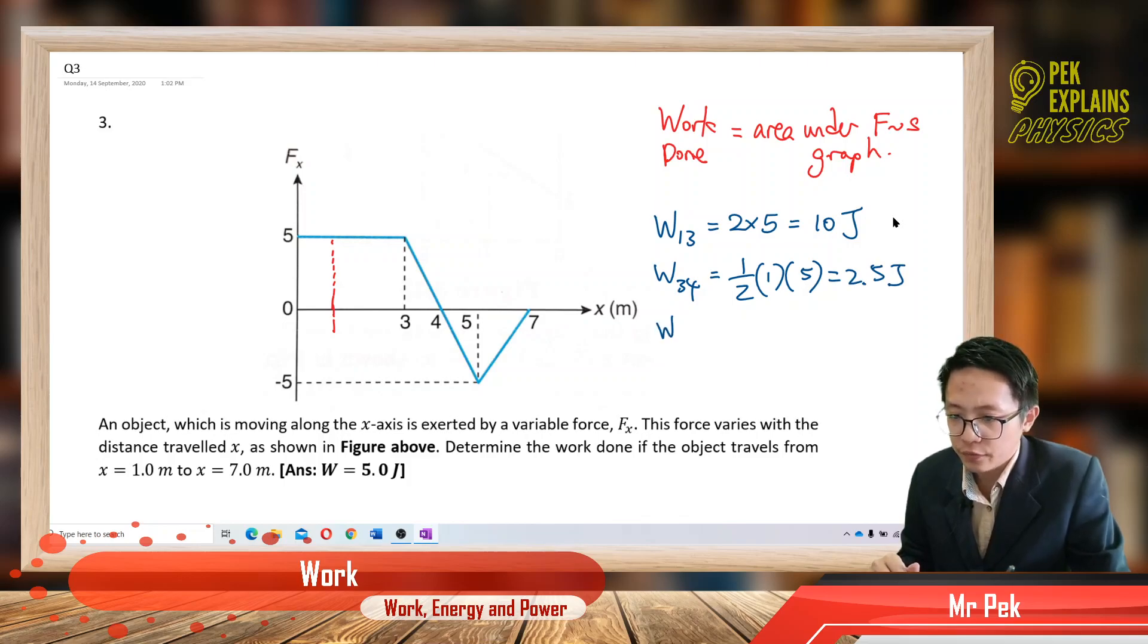And then you have work done for 4 to 5, it's another triangle. But if area under the x-axis, it is a negative work done. It is negative work done. So it's a triangle, half times 1 times negative 5. So this is negative 2.5 joules.